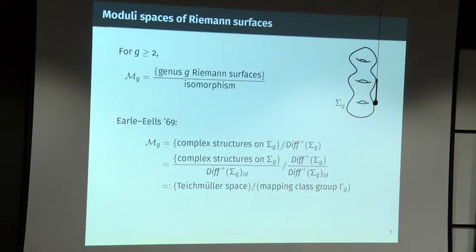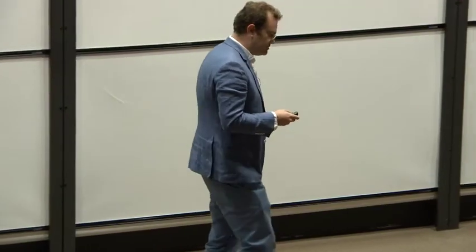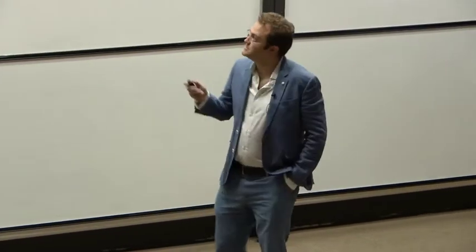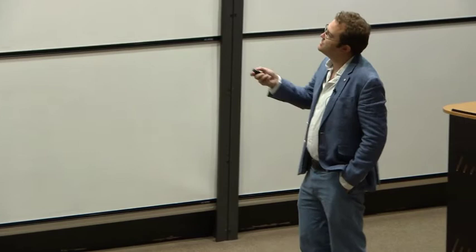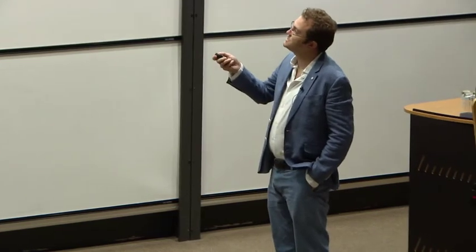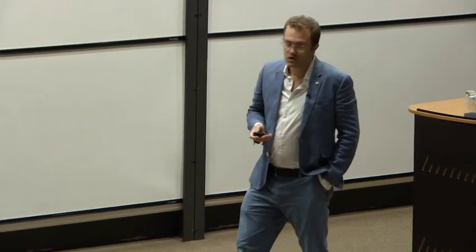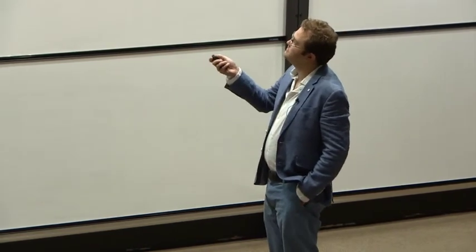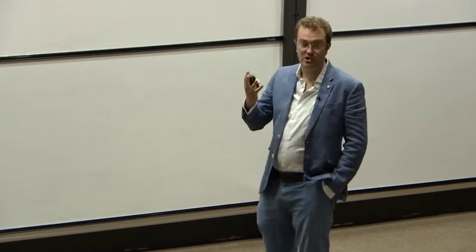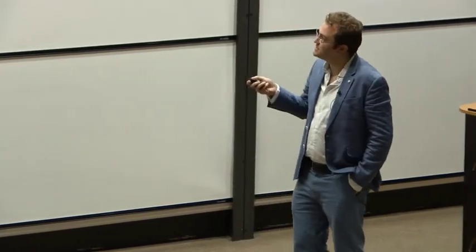You can form that quotient in two steps. First divide out by the action of diffeomorphisms which are isotopic to the identity, and then divide out by what's left. The space of complex structures modulo diffeomorphisms isotopic to the identity is what's known as Teichmüller space, and the residual discrete group is the mapping class group, called Γ_g — the mapping class group of the genus-g surface.